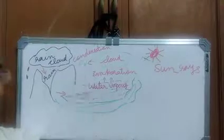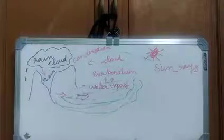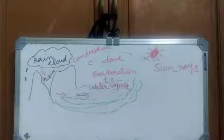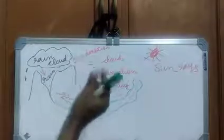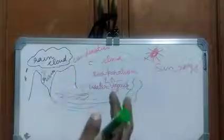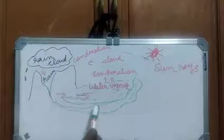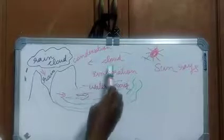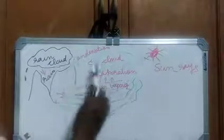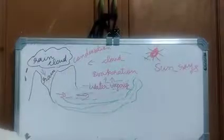The water drops start becoming bigger and heavier. When they become too heavy, they fall down as rain. This rain water again fills the water bodies like rivers, ponds and lakes. Then again evaporation takes place, clouds form, condensation occurs, and it rains again. This is a repeated process in the form of a cycle — it is called the water cycle.